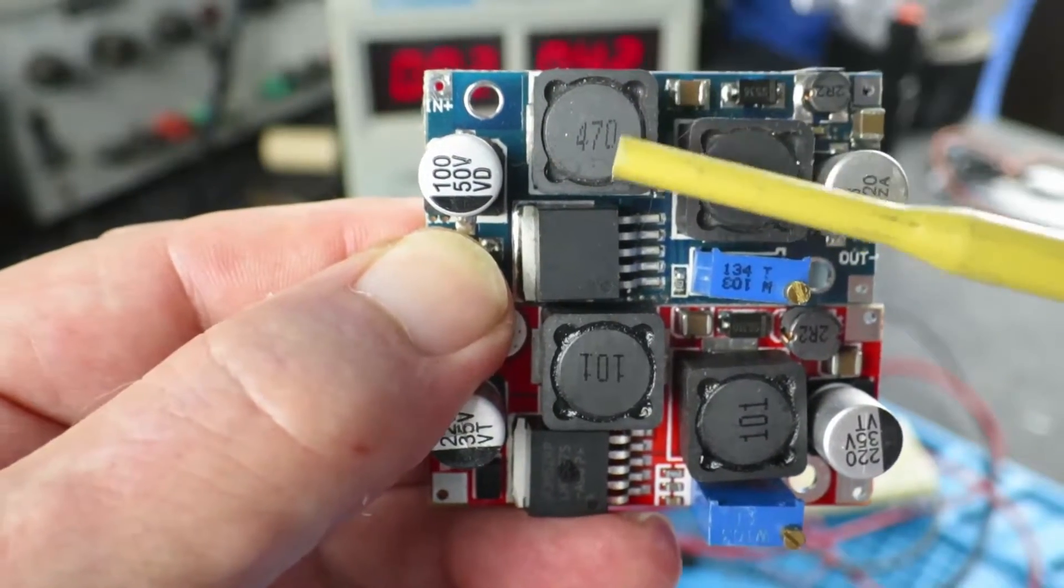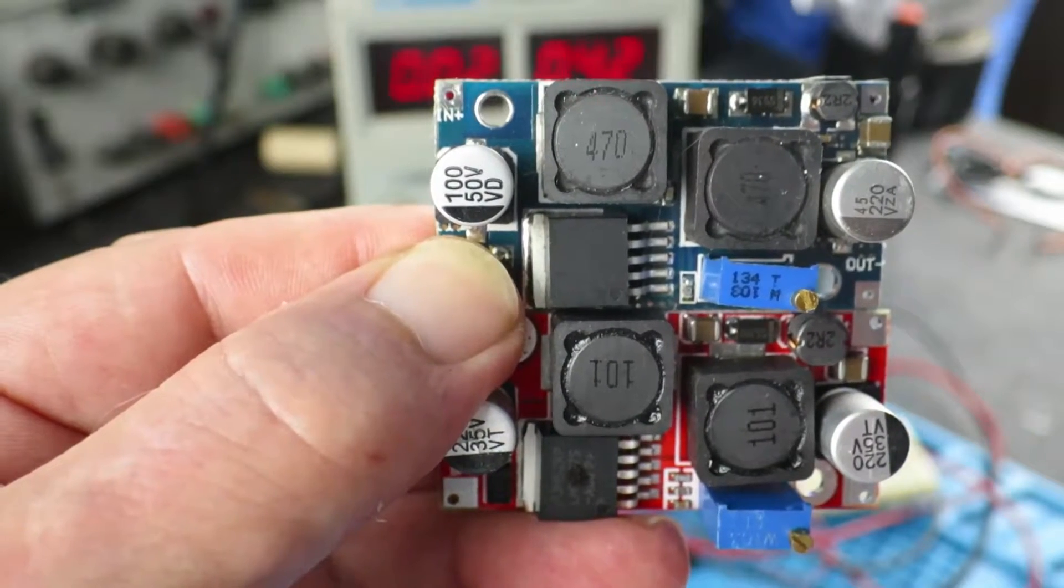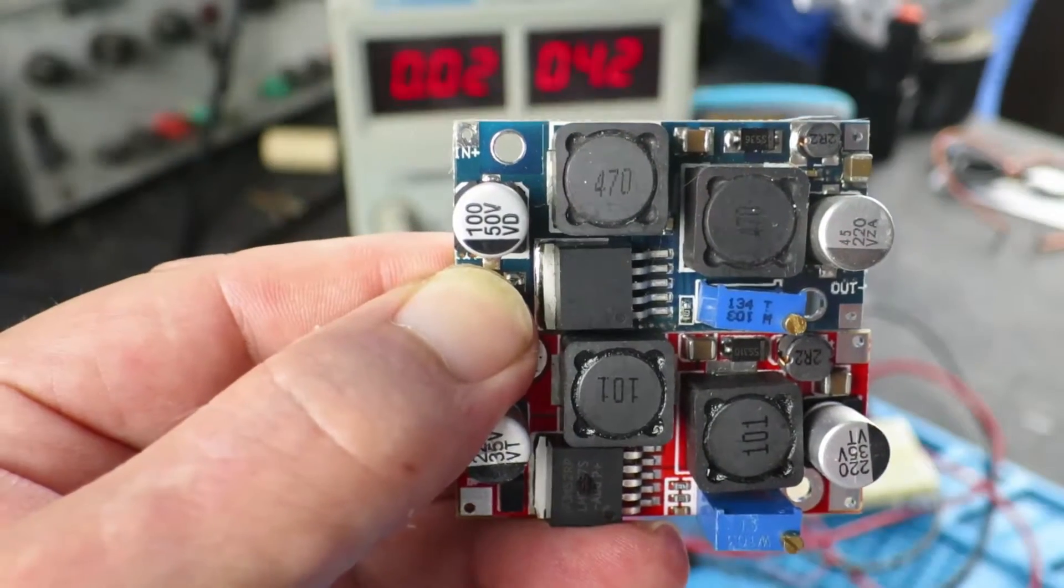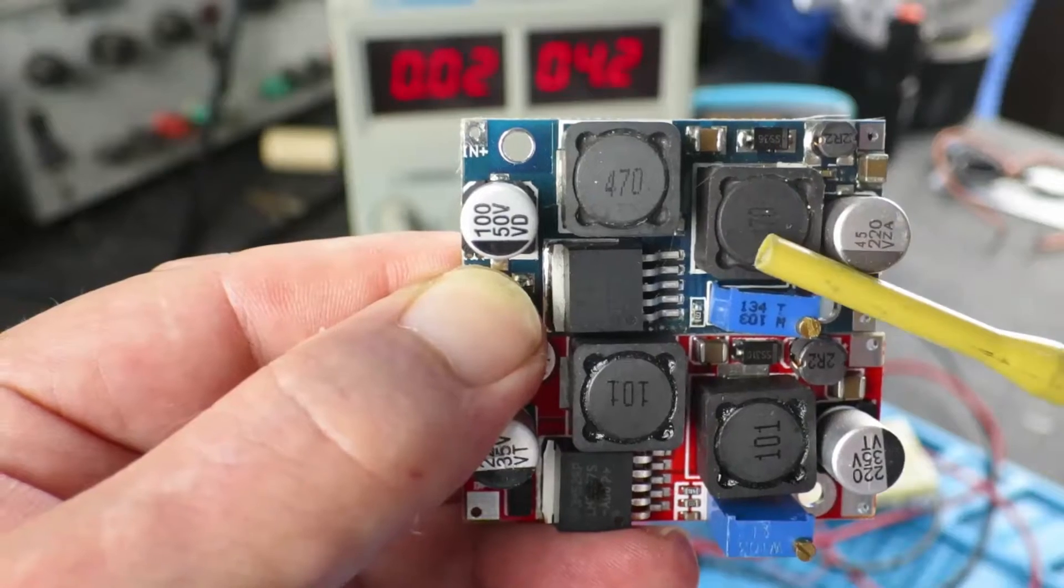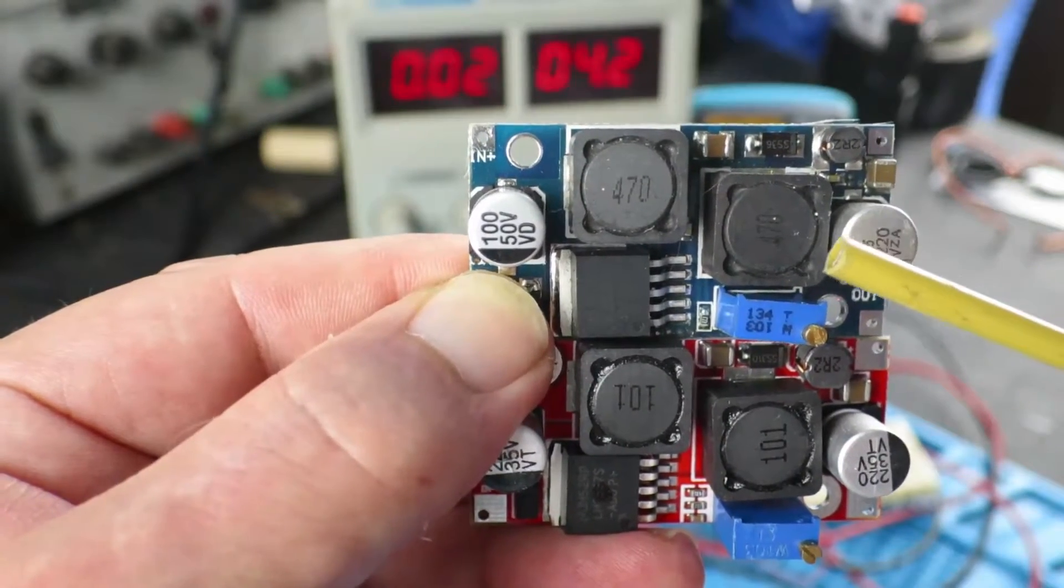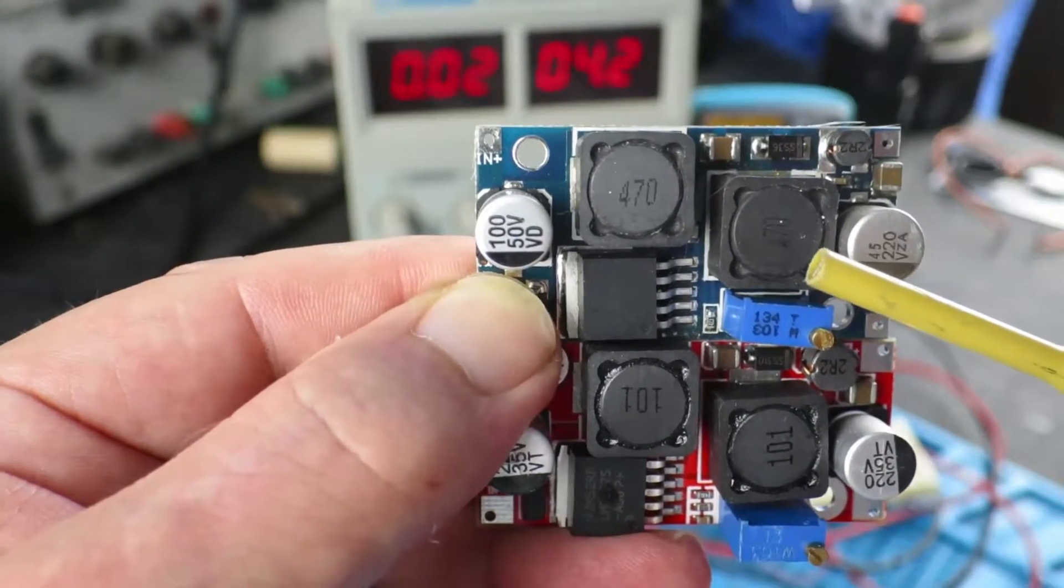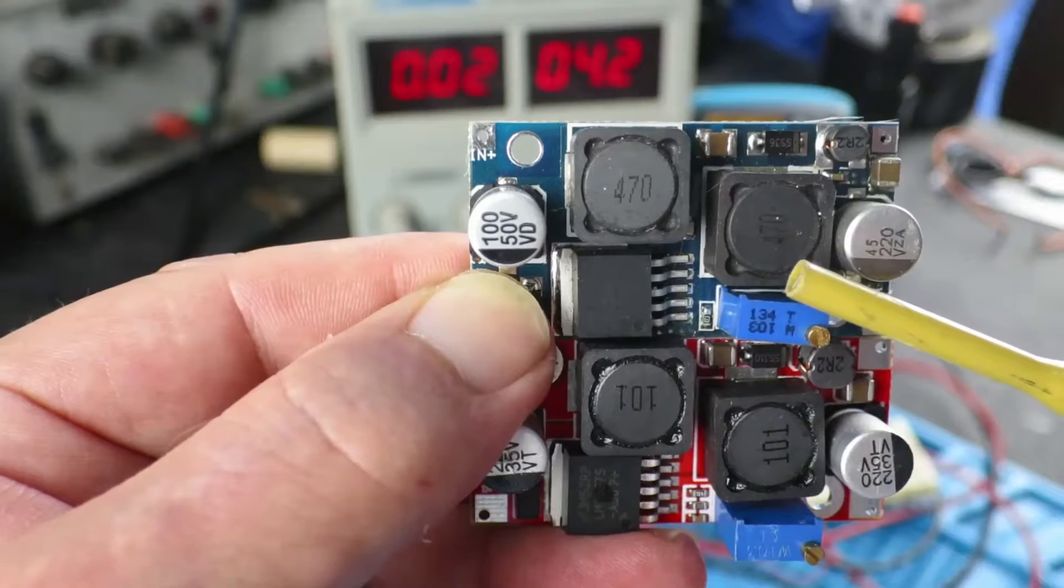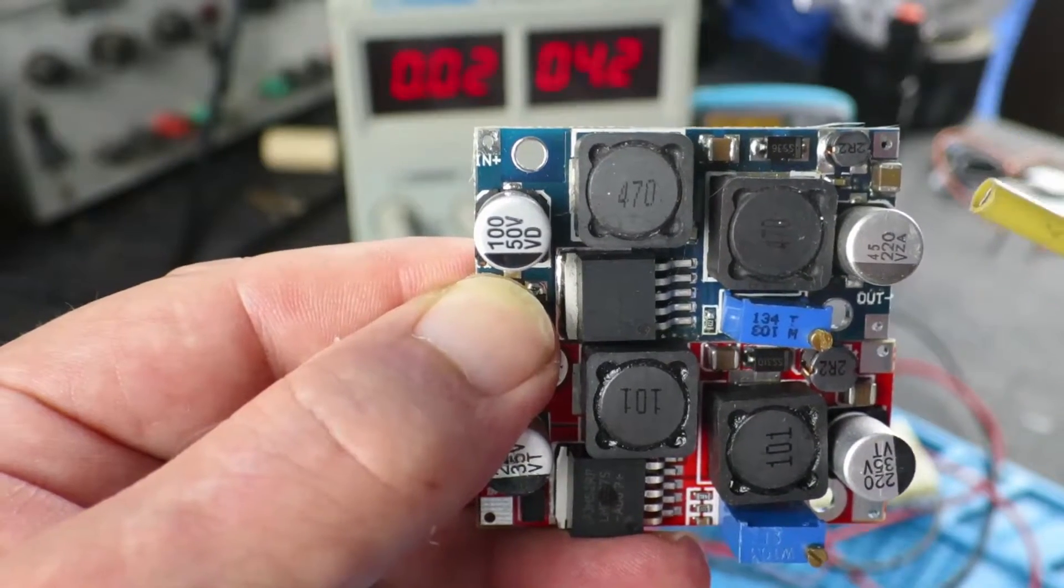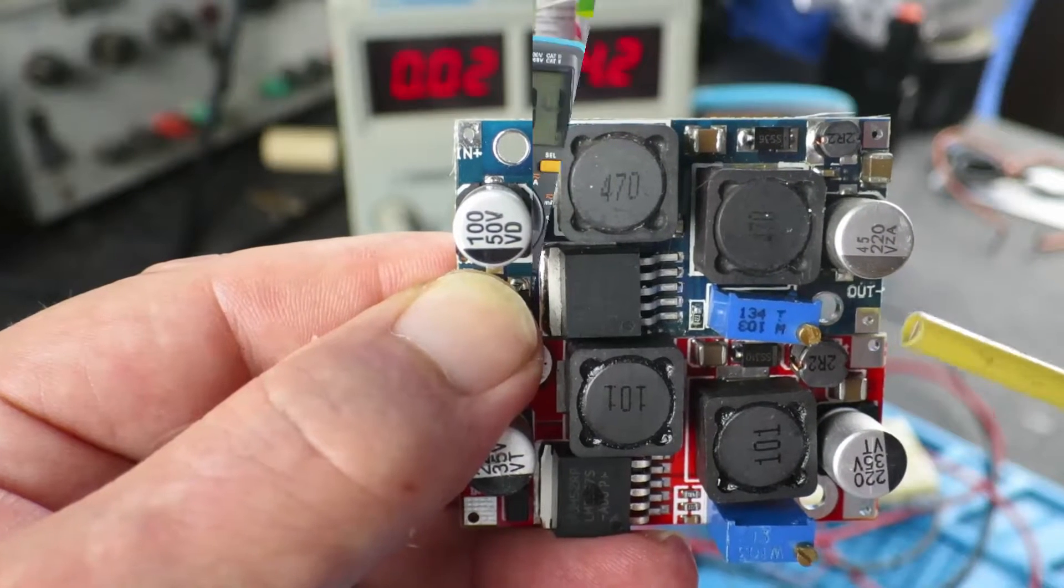A little while ago I reviewed this little buck boost converter and showed a couple of issues that it has. Although it's sold for use in conjunction with solar panels to regulate the voltage, it has a nasty trait whereby if the input voltage drops below about 3.3, suddenly the output voltage shoots up to around 14 as I showed in the previous video.